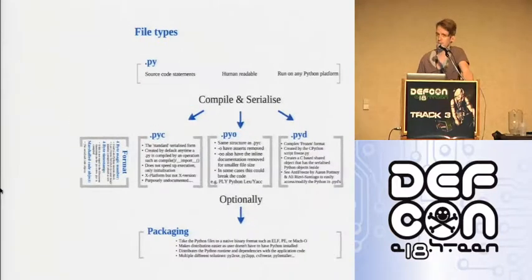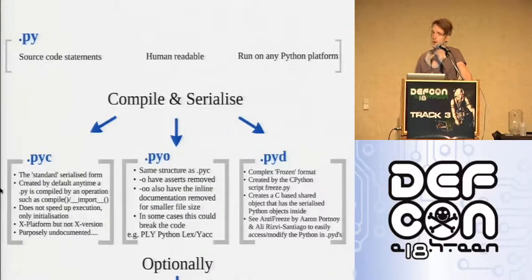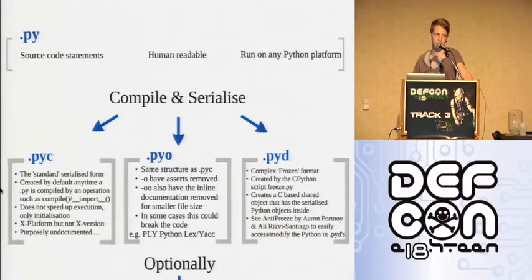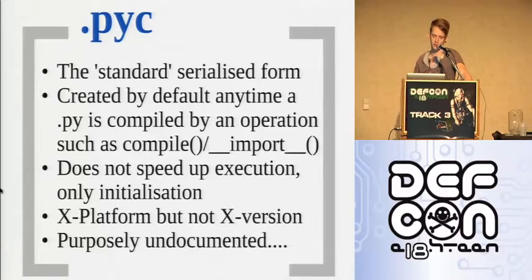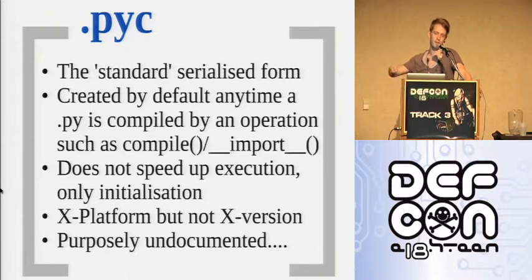Python 101: there are a few different file types. The .py is the one everyone's familiar with — where the source code lives, human readable, can run on any Python platform. Then there are compiled and serialized versions. The .pyc is the most ubiquitous — a standard serialized form. Any time a .py is compiled or imported, a .pyc pops out which is the bytecode equivalent. Contrary to popular belief, it doesn't speed up execution — it purely speeds up instantiation by skipping the compile step.